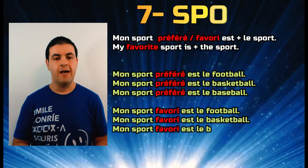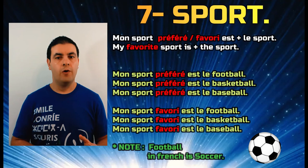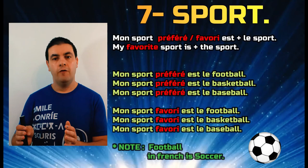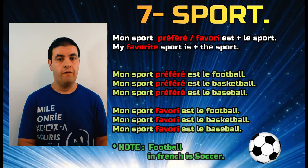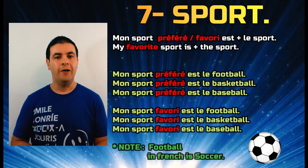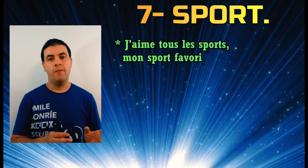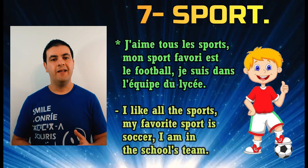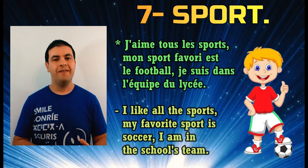Part seven is your favorite sport. You can say 'mon sport préféré est le football,' 'mon sport préféré est le basketball,' or 'mon sport favori est le baseball.' You can also add an extension, such as saying you're on the school team: 'je suis dans l'équipe de l'école.' For example: 'j'aime tous les sports, mon sport favori est le football, je suis dans l'équipe du lycée' — I like all sports, my favorite is soccer, and I'm on the school team.